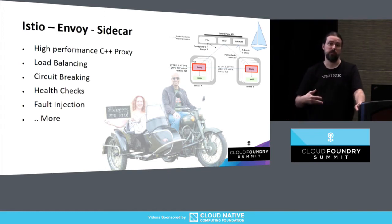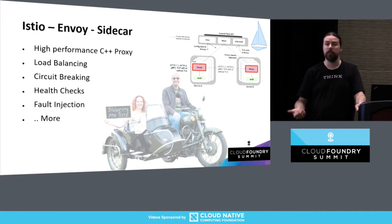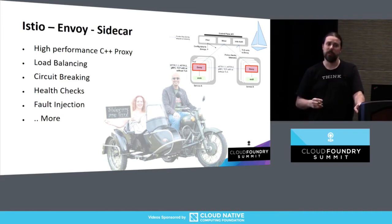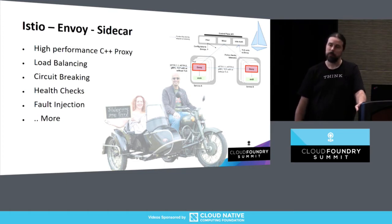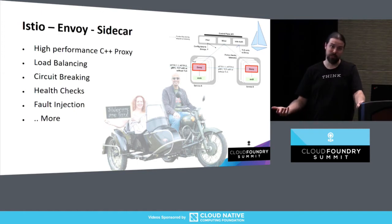Envoy is very important. Sitting in front of all the traffic in and out of your service, it's capable of implementing a lot of what you may previously have done inside the application itself. This means your application no longer needs to explicitly take care of things like load balancing, circuit breaking, health checks, or fault injection. Fault injection is kind of unique to Istio — the idea that you can deliberately fail something between services to test how the rest of your application copes when a failure occurs in production.